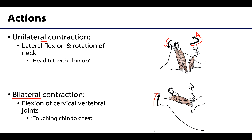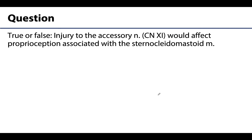That is the sternocleidomastoid muscle in a nutshell — I told you we'd need a full video. Now let's review a classic true or false question: True or false — injury to the accessory nerve, or cranial nerve 11, would affect proprioception associated with the sternocleidomastoid muscle. The answer is false. The accessory nerve is entirely efferent or motor. Proprioception is associated with afferent or sensory innervation, which the SCM receives from fibers of C2 and C3. Please reach out with any questions, and I'll see you in the next lecture video. Have a great day!